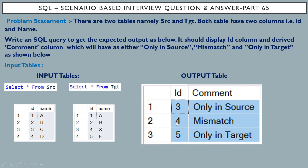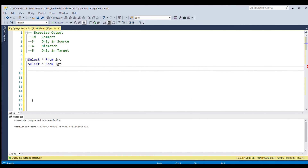For ID equal to 5, which is present only in the target table, you can see in the output table it appears with the comment 'only in target'. This is what we have to achieve in the output table. Let's see how we can do this in SQL Server.